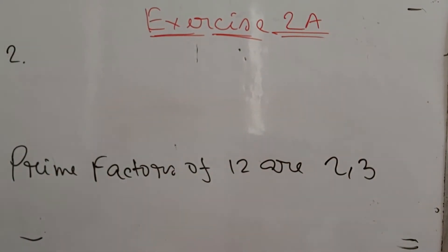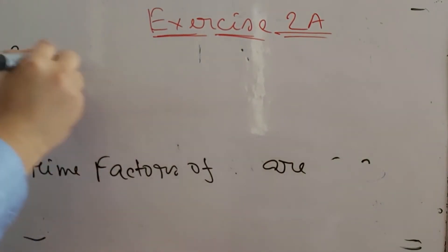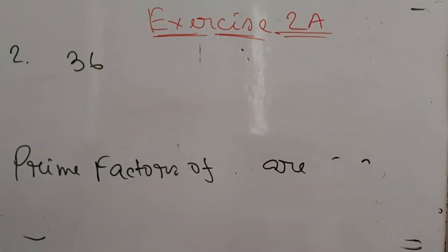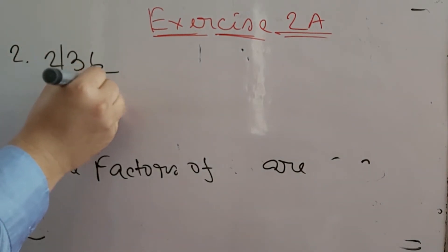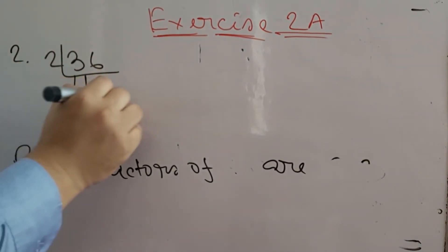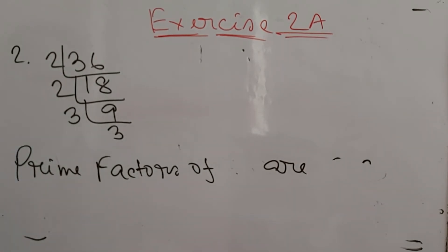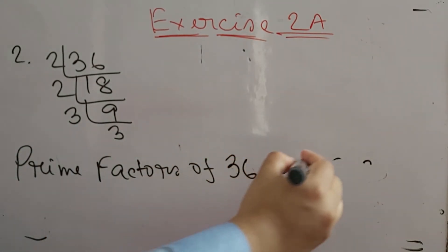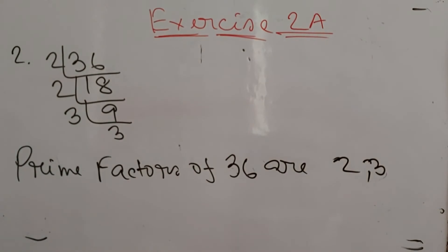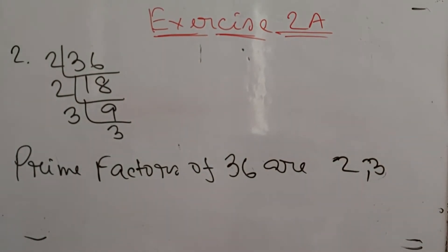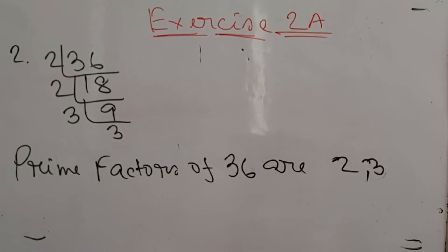Next: 36. You can divide 36 by 2 because 36 is an even number. Working through the division, you will find there are only 2 prime factors: 2 and 3. So the prime factors of 36 are 2 and 3.